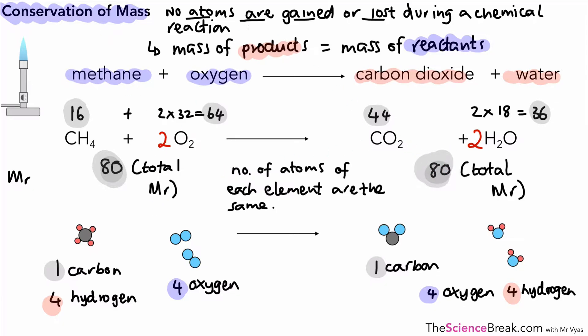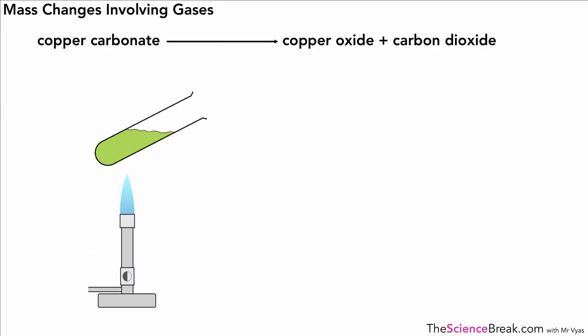We can also say that if we had 80 grams of reactants we would get 80 grams of products, split in the proportions shown. We'll look at that more when we cover reacting masses in a later video.